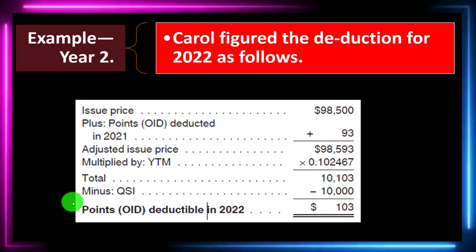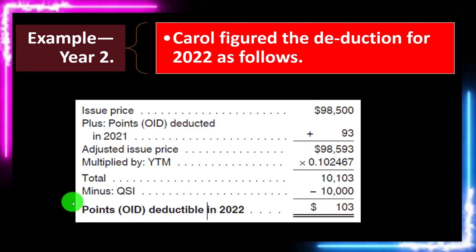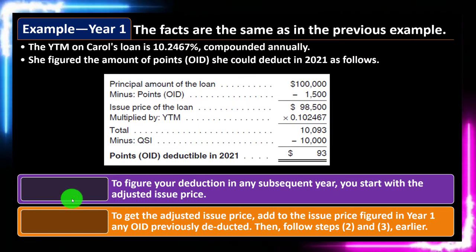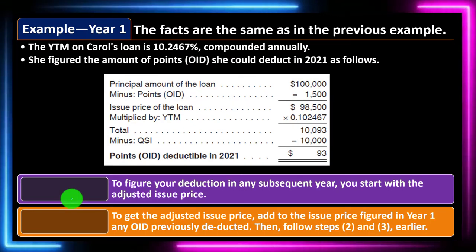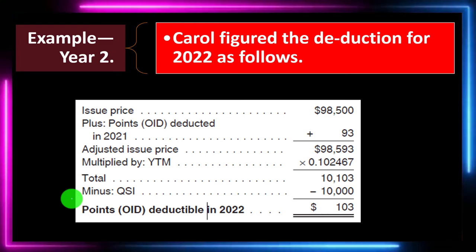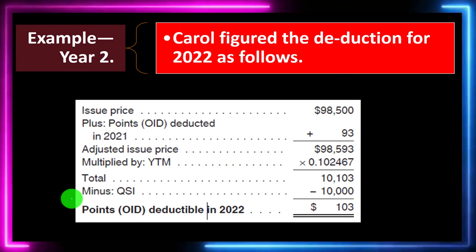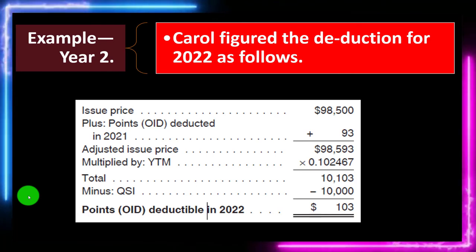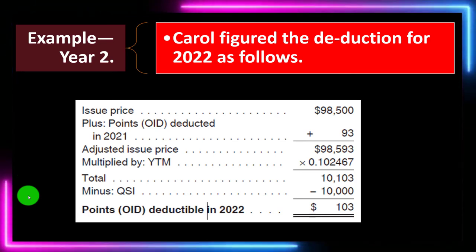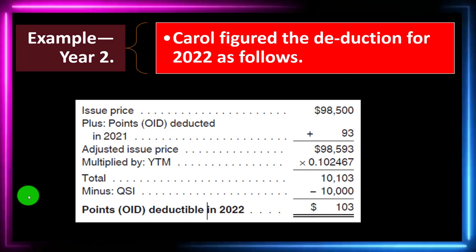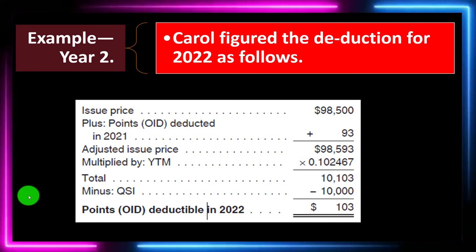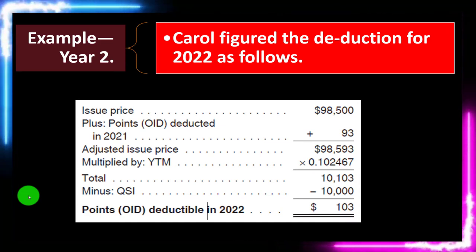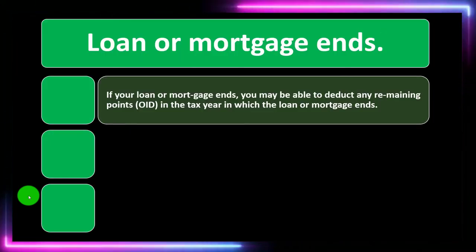That gives us $10,103 minus the QSI of $10,000, so in 2022 the deductible amount is $103 — compared to $93 in the prior year. That's a pretty small difference. In her case, she might have been able to use straight-line since it was de minimis, which would be the reasonable thing to do, unless the amount was significant — in which case you have to do the more exact constant yield method.